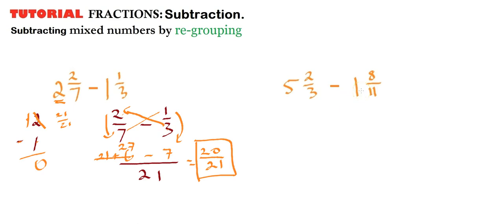Over here, same sort of scenario. We're going to split away the whole number. So 5 over here minus 1. That's this one. And then we're going to deal with the fractions over here. So 2 thirds minus 8 elevenths. So we're going to deal with 33. So 3 times 11 is 33, that'll become our denominator.